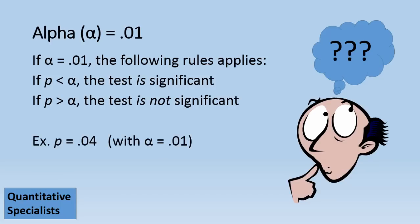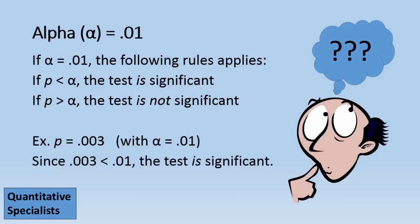So if we have an example here with a p of .04, using alpha .01, we would see that the test is not significant because .04 is greater than .01. If we had an example of .003, we would see that it is significant in this case because .003 is less than .01.